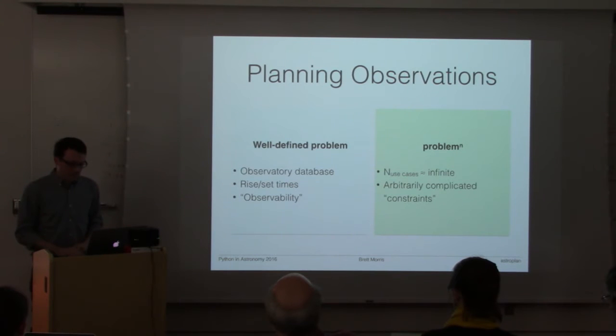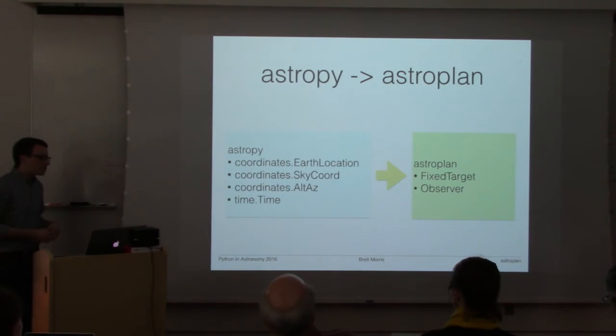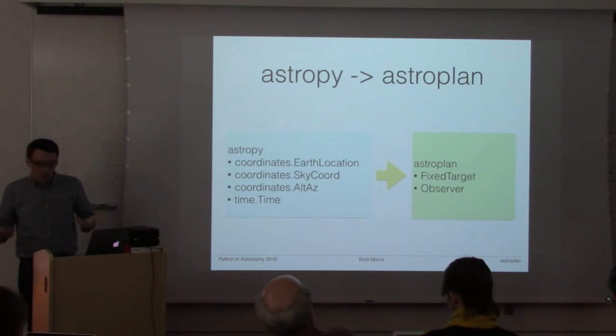To do that we're using AstroPy's functionality for defining a location on the surface of the earth, for defining a location in the sky, joining the two with an altitude azimuth reference frame and then figuring out what's observable.